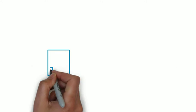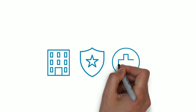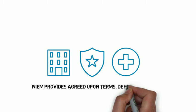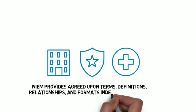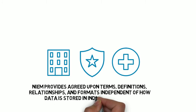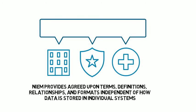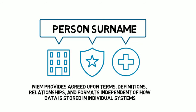Using NEEM, organizations come together to agree on a common vocabulary. Rather than starting from scratch, NEEM provides agreed upon terms, definitions, relationships, and formats independent of how data is stored in individual systems, so that last name, surname, and family name all mean the same thing — person surname — once they're mapped to NEEM.